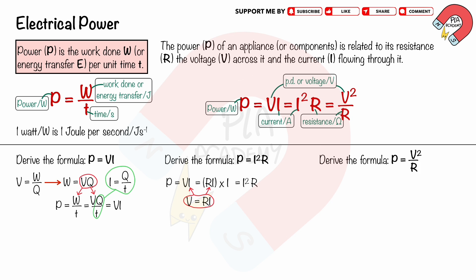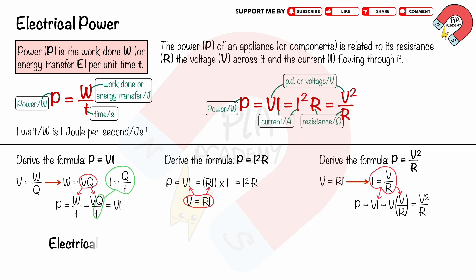We can derive the formula P equals V squared over R as follows. From the formula V equals RI, and rearranging as I equals V over R. Substituting I equals V over R into P equals VI, we get P equals V squared over R.